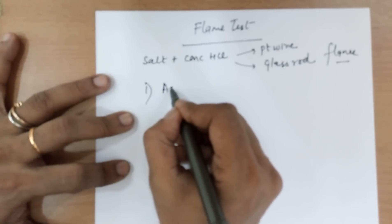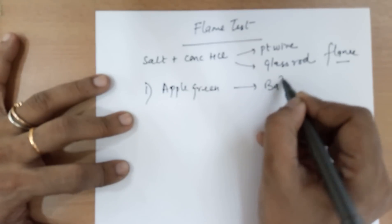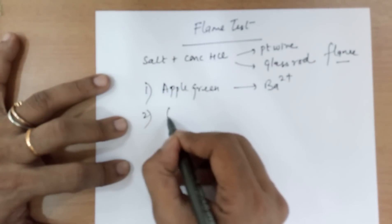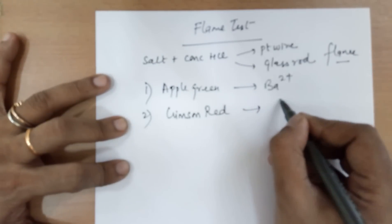If the flame is apple green, that indicates barium ions confirmation. If it is crimson red, that is pinkish red, indicates strontium ions.